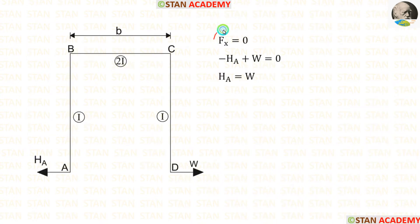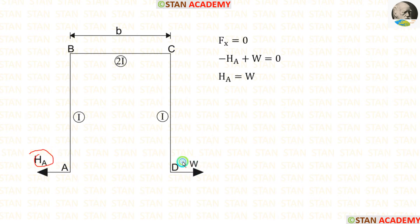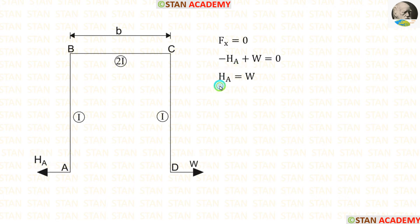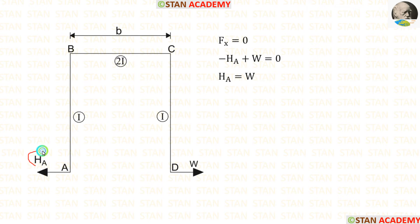Now let us apply the equilibrium rule. The summation of horizontal forces equals zero. In this frame, we have two horizontal forces: HA and W. W is acting on the right side, so it is positive. HA is acting on the left side, so it is negative. Finally, we get HA equal to W. We are getting a positive value, which means our assumption is correct — HA is acting towards the left side.